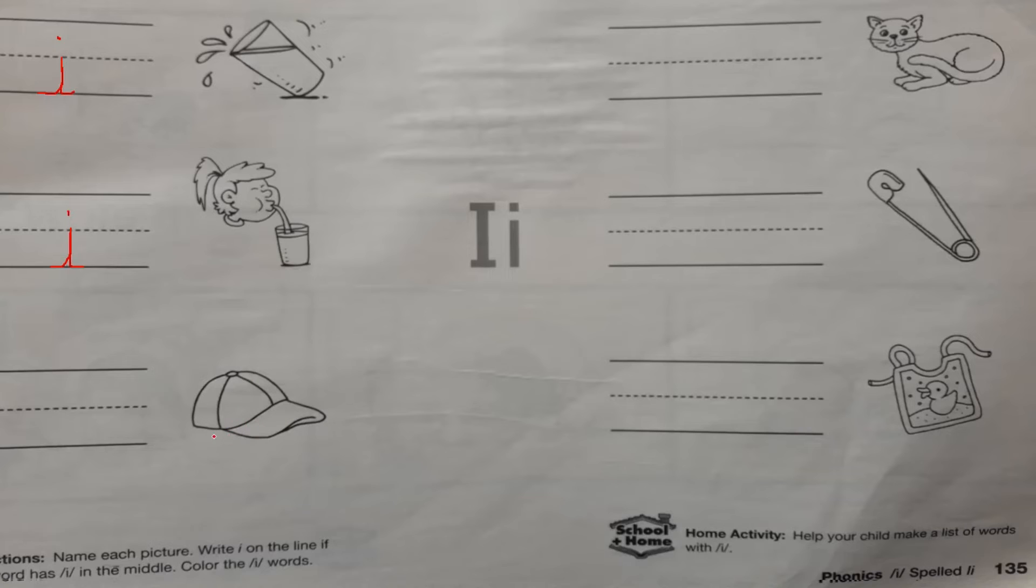What do I have here in the third picture? Cap. Do I have I in the middle? No. Do I write I on the line? No. Here I have cat. Cat. Do I have I in the middle? No. What letter is in the middle? A. Excellent.